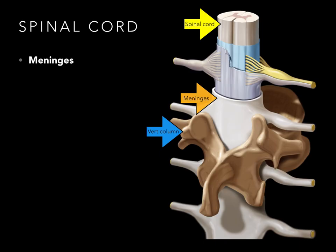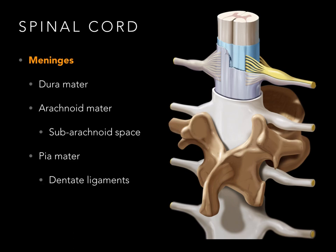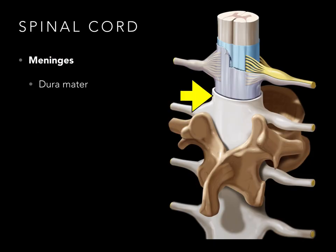The dura mater, arachnoid, and pia mater, and the associated cerebrospinal fluid act as the seat belt for our spinal cord. So here are the meninges: there's dura mater, arachnoid mater, and pia mater. Let's talk about each one of these.